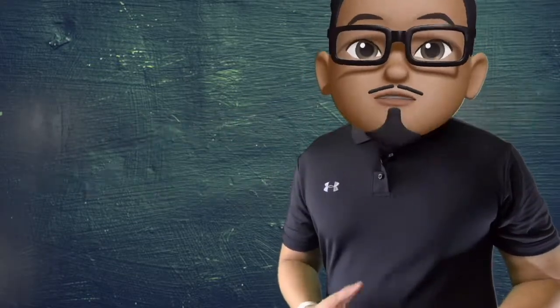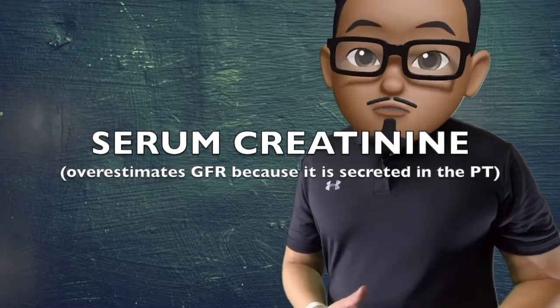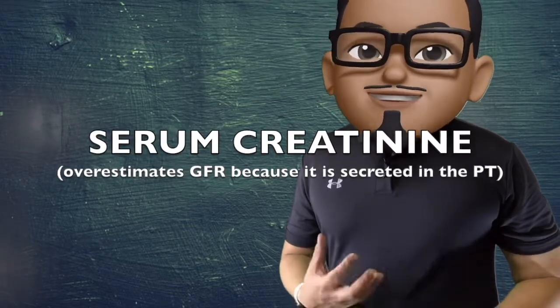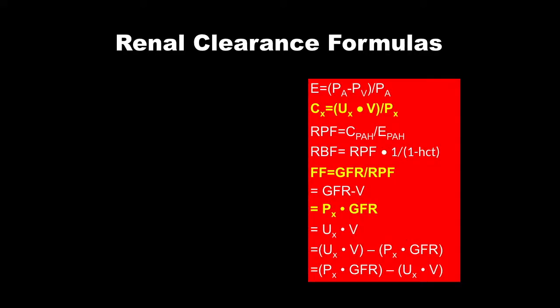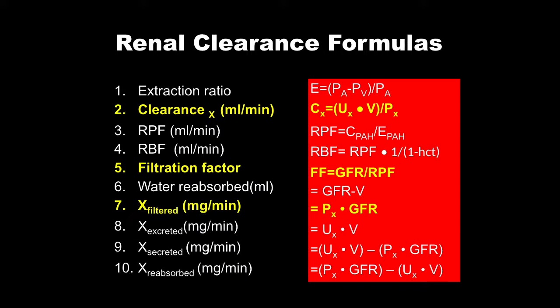However, the process of using inulin is too cumbersome and cannot be used in the clinics. Creatinine, which is a product of muscle metabolism, is commonly used instead. However, it slightly overestimates GFR because creatinine is moderately secreted in the proximal convoluted tubule. These are the different renal clearance formulas that you should know — note the highlighted ones as these are the commonly used formulas in the exam and in the clinics.